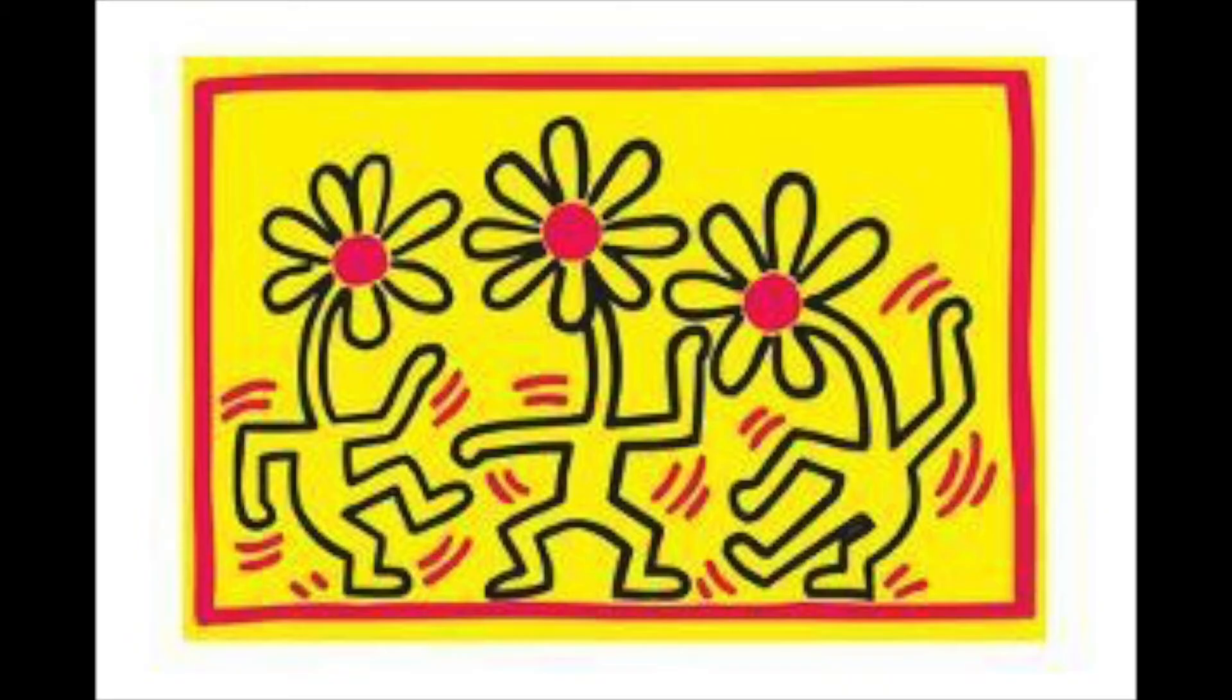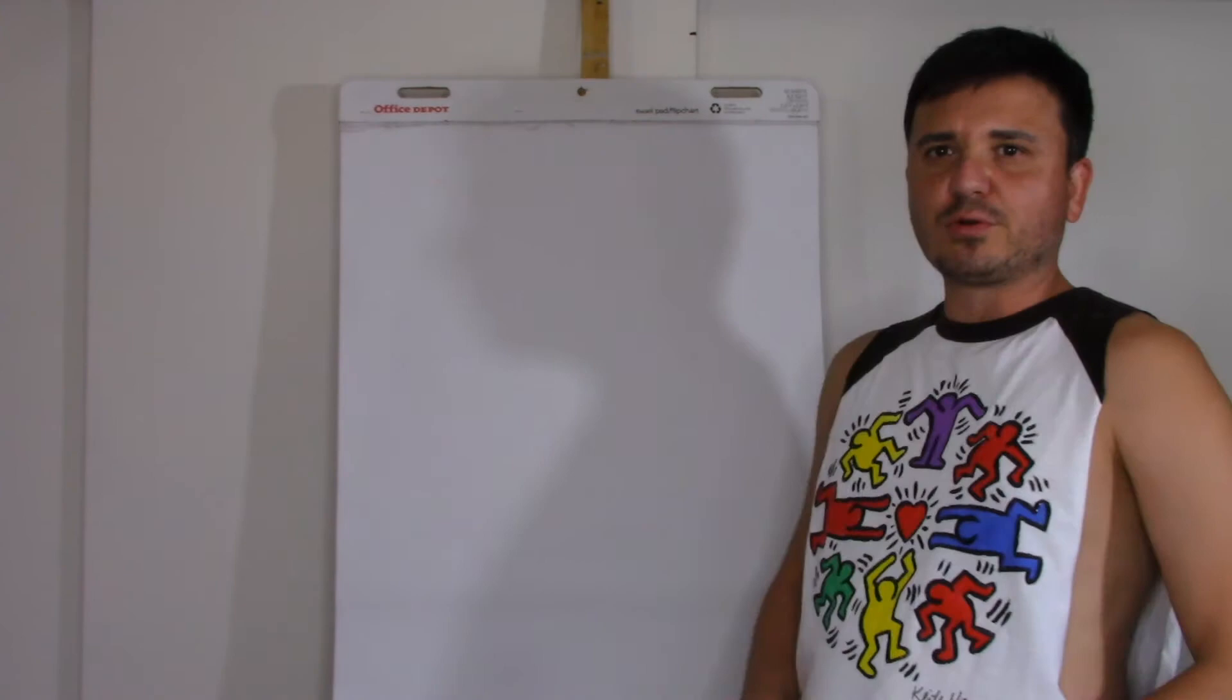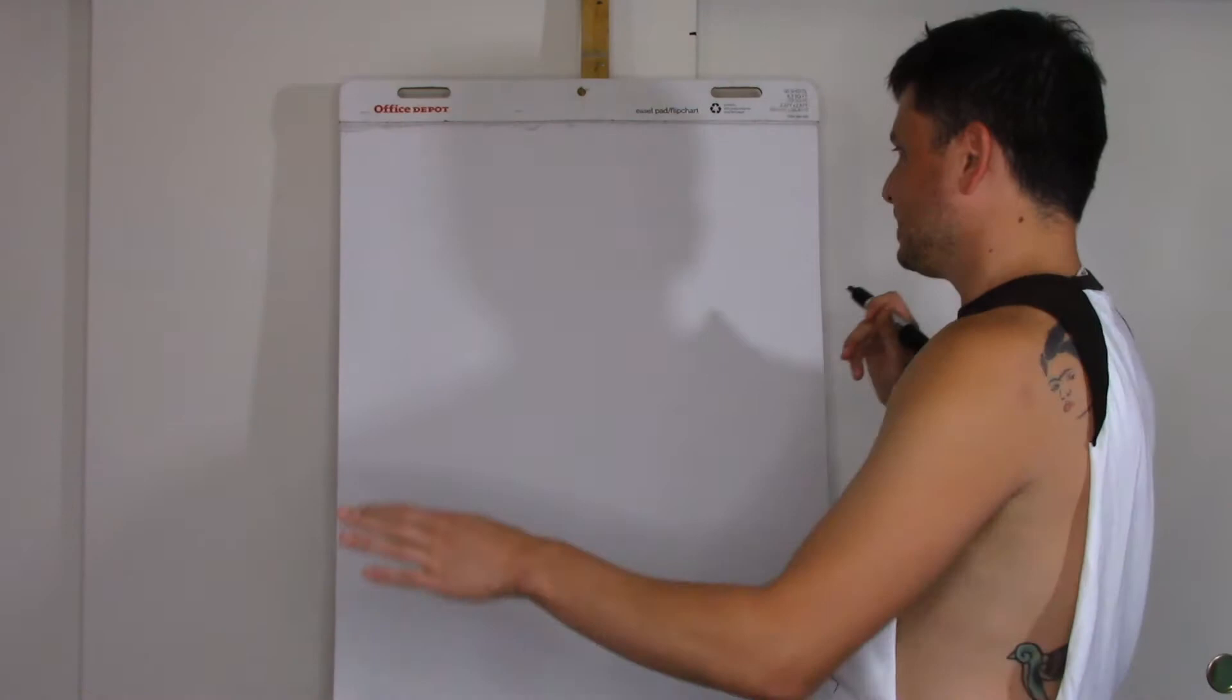So today we're going to do this right here, which is like dancing daisies. There's three of them in this picture, but I'm only going to do two due to the size of the paper, and I'm going to take a lot of artistic liberties with this one. So grab your pencils and your erasers. I'll get a sharpie, of course. So I'm going to start by making two circles, because I'm only doing two of the daisies, right above the middle line.